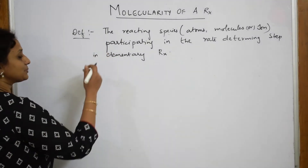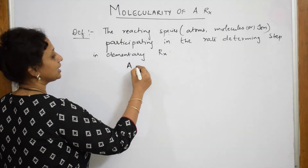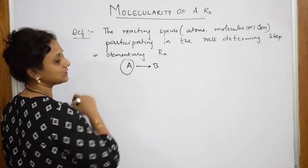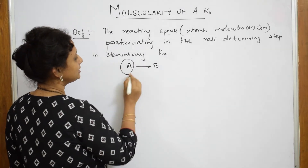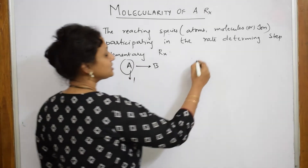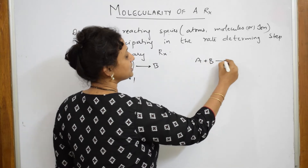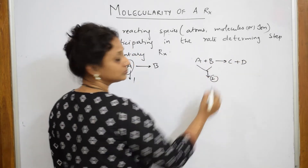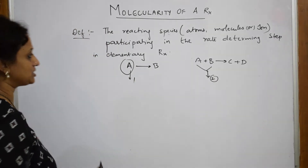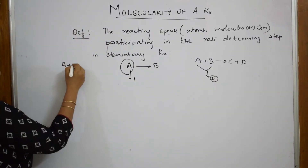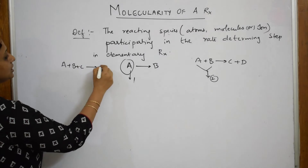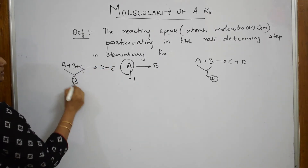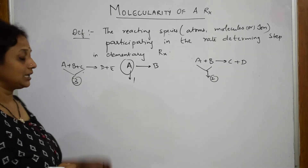Suppose if I have a reaction A giving me B — how many are participating? The molecularity here is one. If I have A plus B giving me C plus D, the molecularity is 2. If there is A plus B plus C giving me D plus E, the number of reacting species is 3, so the molecularity is 3.